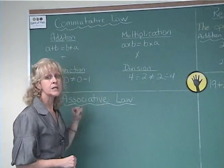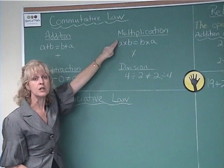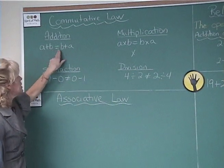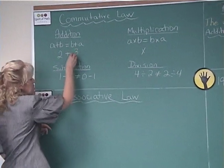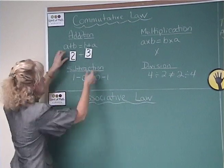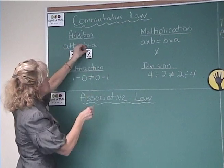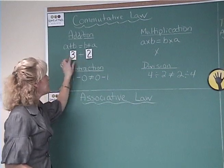First of all, commutative law. I'm going to explain this to you. Commutative law works for addition and multiplication. In other words, a plus b is equal to b plus a. So if you had 2 plus 3, and let's use that here, that would equal 3 plus 2. Notice the addition is staying there and the numbers are moving around.